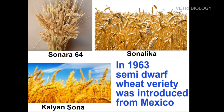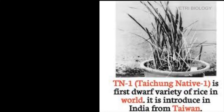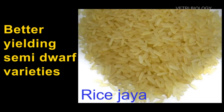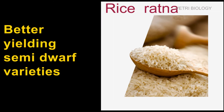In 1963, semi-dwarf wheat varieties were introduced in India from Mexico, such as Sonora 64, Sonalika, and Kalyan Sona. These varieties led to increased crop yield in developing countries by introducing high-yielding, resistant varieties along with increased irrigation facilities and fertilizers. Then, better-yielding semi-dwarf rice varieties like Jaya and Ratna were produced in India.